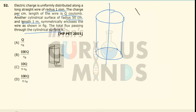Lambda, that is the charge per unit length, is equal to q divided by l. So the total lambda enclosed here will be equal to q divided by l, which is q divided by 1.